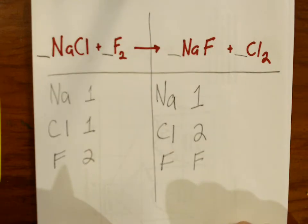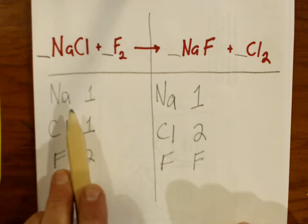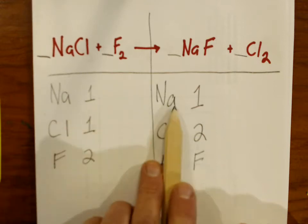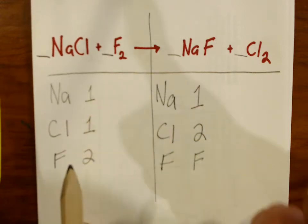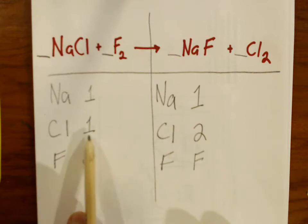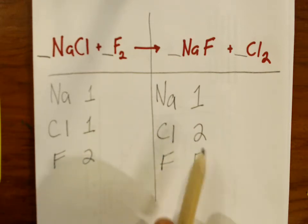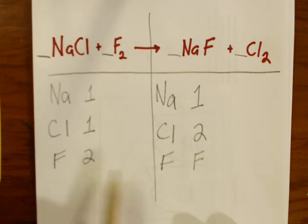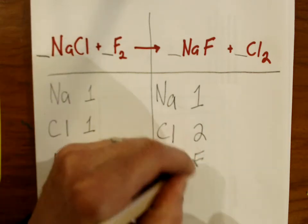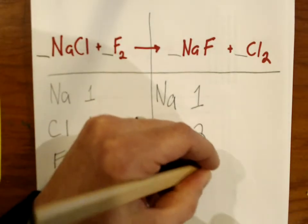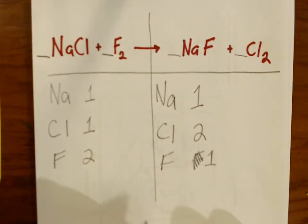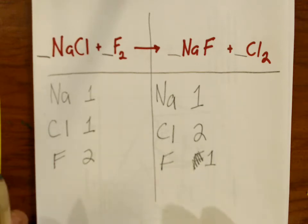Clearly from this inventory, this equation is not in balance. There appears to be one sodium atom on each side — hooray for sodium. But there's one chlorine on the reactant side and two on the product side — that's no good. And two fluorines on the left side and one fluorine on the right side — that's not balanced either. So now we're going to go about balancing things.